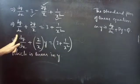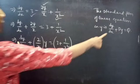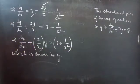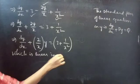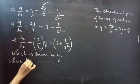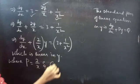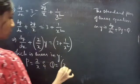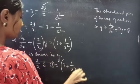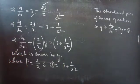Comparing with the standard form dy by dx plus P times y equals Q, we get P equals 2 by x and Q equals 3 plus 1 by x squared. So here P and Q are functions of x only.